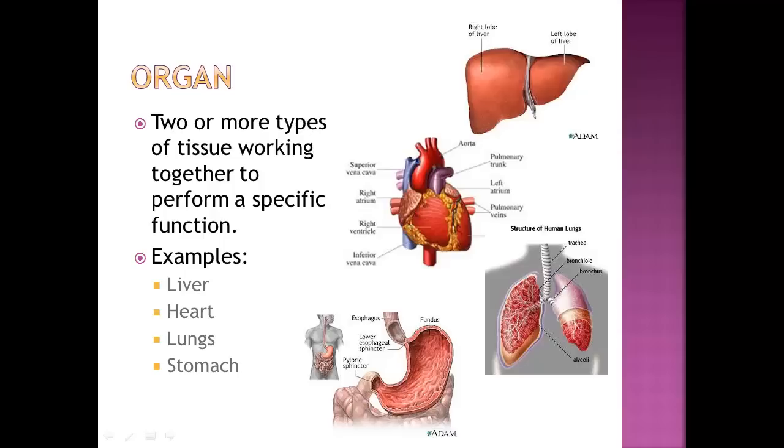The next level of organization is the organ. When two or more types of tissue work together to perform a specific function, we call them organs. And in this slide, you can see a picture of the liver, the heart, the lungs, and the stomach, just to name a few.